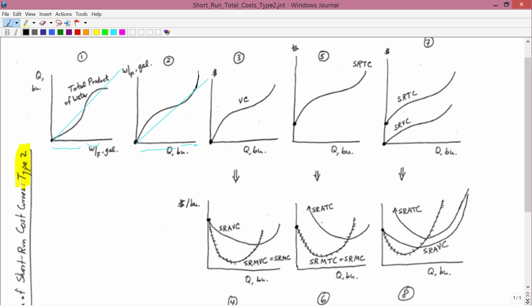Again, the way you go from 2 to 3, 2 is W. 3 is variable cost, which is the price of water times water. So that involves taking number 2 and then stretching it out vertically if the price of water is greater than 1, squashing it in vertically if the price of water is less than 1, and leaving it the same if the price of water is equal to 1. The bottom line is, regardless of what the price of water is, graph number 3 has the same basic shape as graph number 2, and the basic shape is the only thing that we really care about.